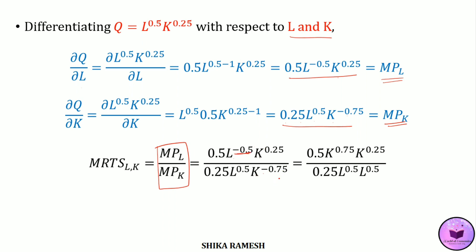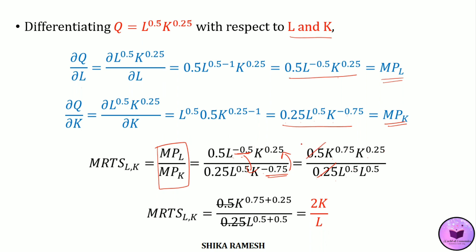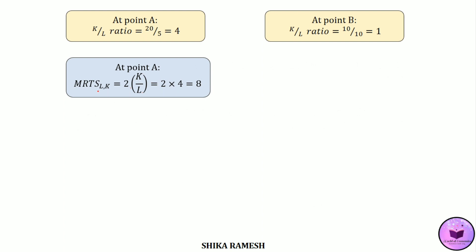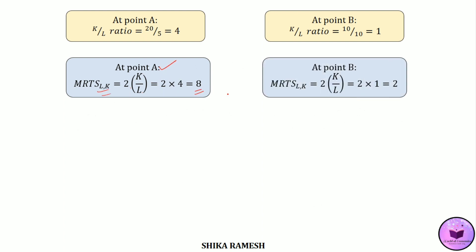Now substituting these terms onto the equation MPL/MPK, we get 0.5 · L^(−0.5) · K^0.25 divided by 0.25 · L^0.5 · K^(−0.75). Here we have negative exponents for labor and capital, so bringing K^(−0.75) onto the numerator and L^(−0.5) onto the denominator, we get 0.5 · K^0.75 · K^0.25 divided by 0.25 · L^0.5 · L^0.5. Since 0.5/0.25 = 2, and adding the exponents, we get 2K^(0.75+0.25) / L^(0.5+0.5), which equals 2K/L. So the marginal rate of technical substitution of labor for capital is 2K/L. Substituting the K/L ratio at point A gives MRTS at A = 8, and MRTS at B = 2.